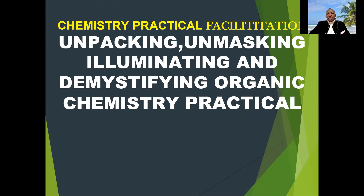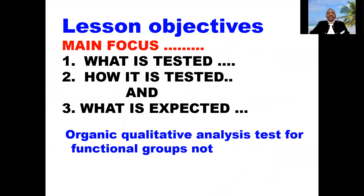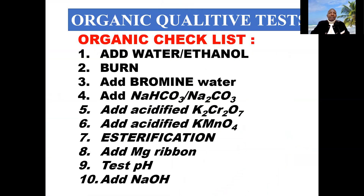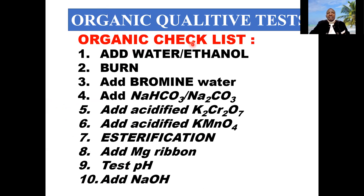Wherever a student is waiting for an exam, you focus on three main areas: what is tested, how it is tested, and what is expected. The organic qualitative analysis tests for functional groups. So this is the checklist for organic qualitative analysis, and the first thing that takes you through what can be tested in paper 3.